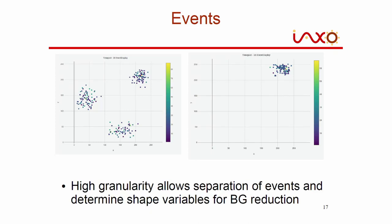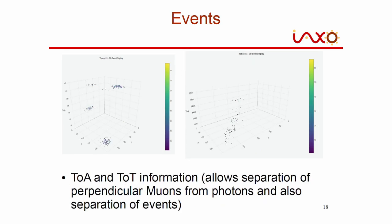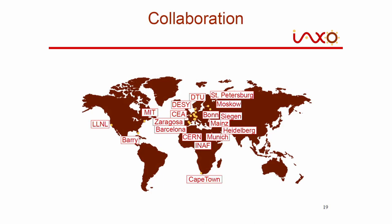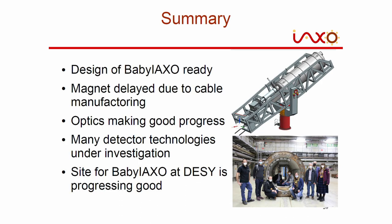Finally, some example events from the GridPix detector. Round, compact shapes are characteristic of photon conversions at a single point, with electrons drifting down and diffusing. The number of pixels gives the energy. In one example you can see three photons; in another, what looks like one photon turns out on the time axis to be a muon track coming in perpendicular to the detector; and in another event you can see four photons incoming. Our collaboration is spread all over the world.